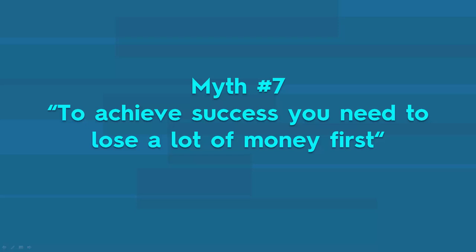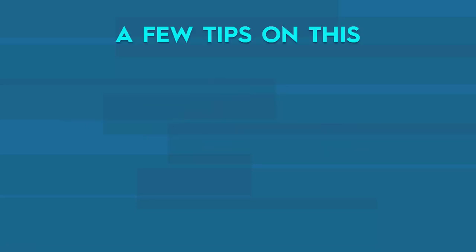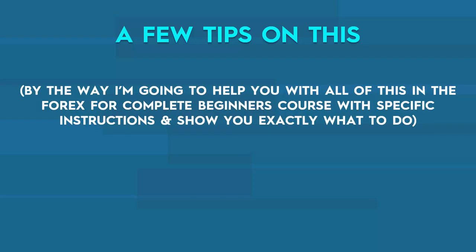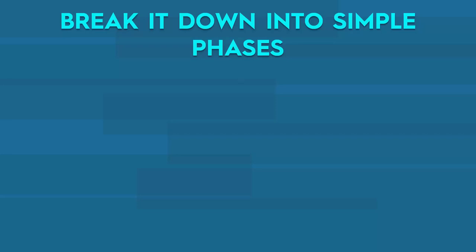We will do everything we can in this series of tutorials to equip you with all the knowledge you need. So as we discussed, myths are things that prevent you from getting started now, while rookie mistakes can trip you up later. How can you get started? Break it down into simple phases. Phase one: install MetaTrader 4. If you go to forexbot.com/brokers, you'll see a list of brokers I recommend, but you don't even need to choose a broker right now — just get MetaTrader 4 from any broker and install it, because you're after a demo account at this stage.